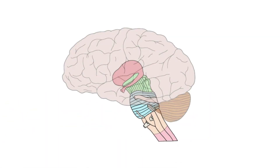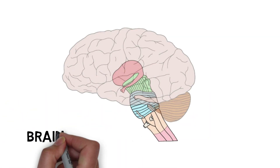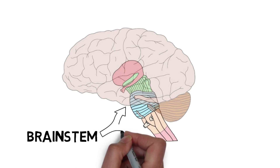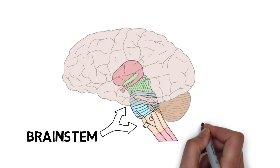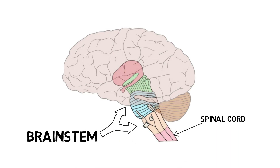The brainstem is a structure that extends from the base of the brain and connects the brain to the spinal cord. It contains many important pathways that run between the brain and spinal cord, as well as pathways to other areas like the cerebellum. It also contains a large number of important nuclei and is essential to survival and healthy nervous system function.